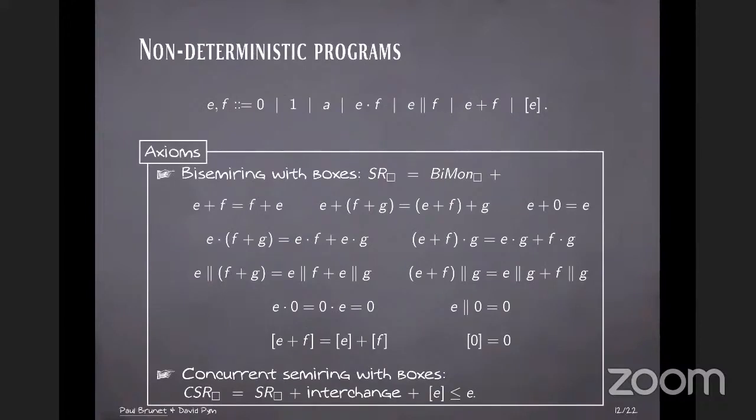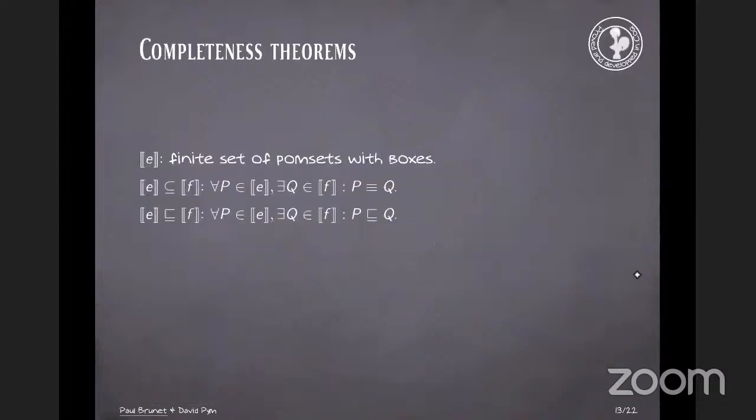So to model all this, we need to add a non-deterministic choice to our programs. So we do this as usual, we add the plus that models non-deterministic choice. So constant zero, which is in a way the non-deterministic choice, some axioms. They're just usual distributivity, commutativity kind of things. And we have two sets of axioms, depending on whether or not we want to have subsumption in our semantics.